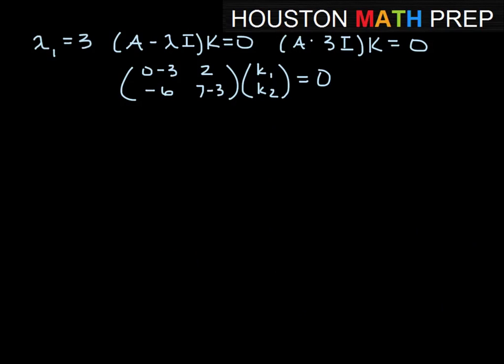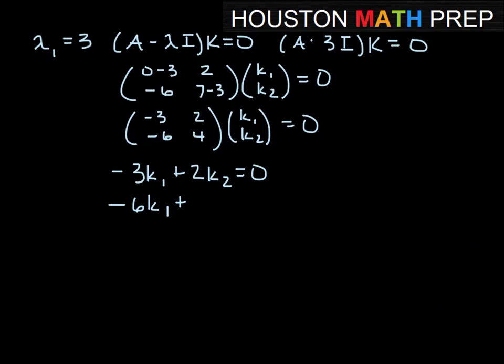Which is our column vector of constants here, equal to 0. And this gives us, let me rewrite, -3, 2, -6, 4 times K₁, K₂, and that vector equal to 0. Now we get two equations from this.